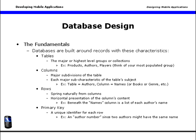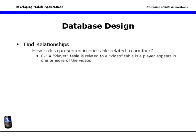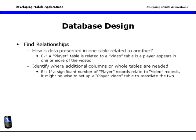Your purpose in database design is to find relationships — to determine how data presented in one table might be related to another. For example, in your sports database, a player table might be related to a video table, as a player appears in one or more of the videos. You want to identify where additional columns or whole tables might be needed. If a significant number of player records relate to a significant number of video records, it might be wise to set up a player-video table just for that player's video, in order to associate the two related concepts.